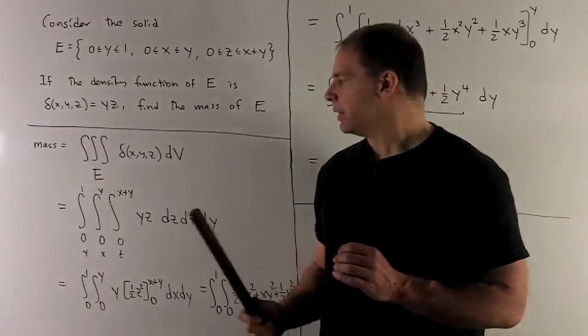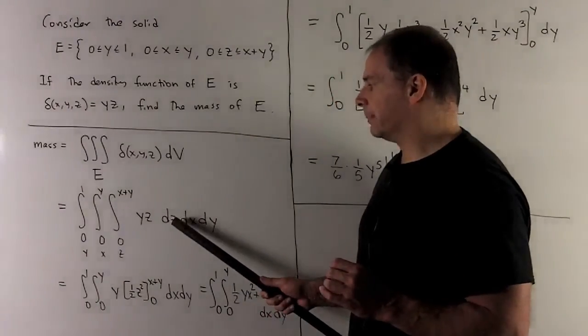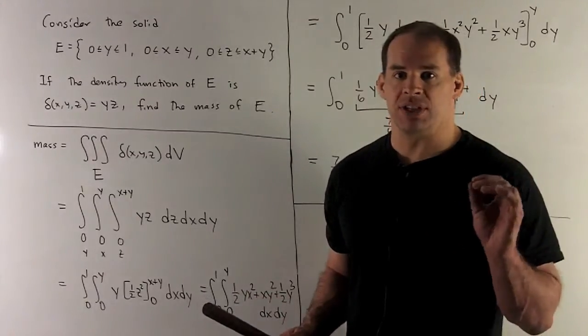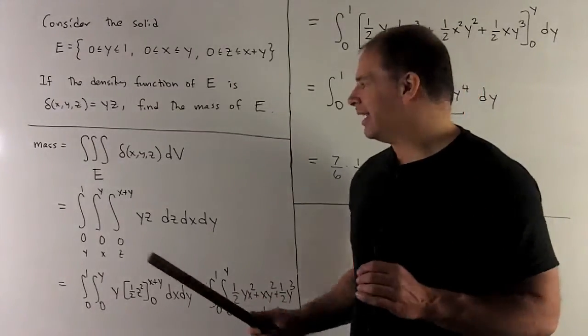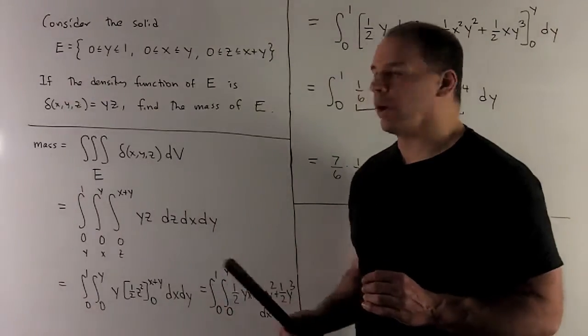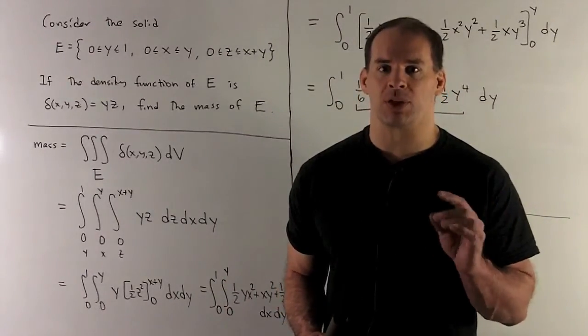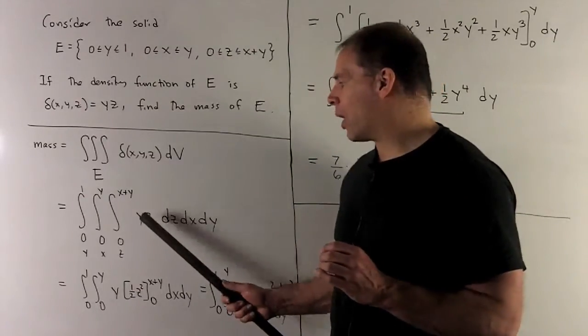The first step, we're going to integrate with respect to z. We treat the y as a constant. z goes to one-half z squared, and then we evaluate at x plus y and zero. The zero goes to zero, so we're just left with one-half (x + y) squared, and then we'll multiply that by y.